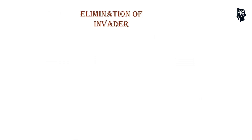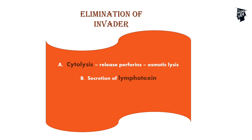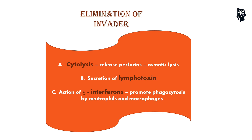The final step is elimination of the invader. There are three processes: first is cytolysis, second is secretion of lymphotoxins, and third is action of gamma interferons. In cytolysis, cytotoxic T-cells release perforins, which form water channels in the pathogen membrane. Water enters the pathogen, causing swelling and osmotic lysis, leading to cell destruction.